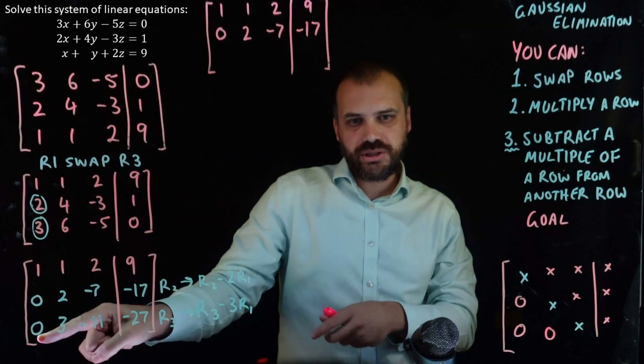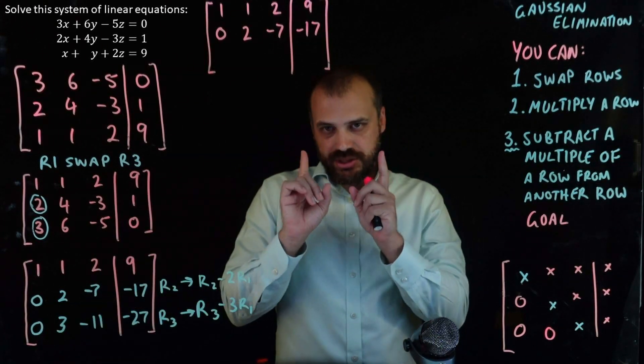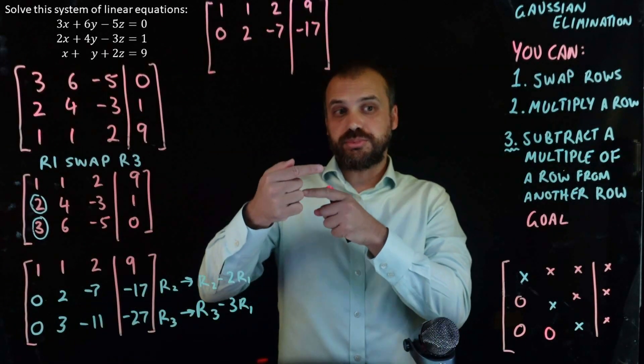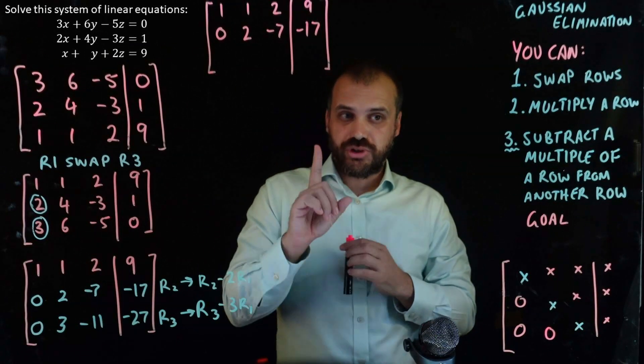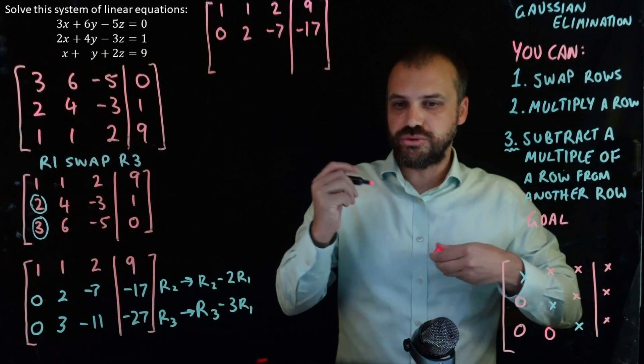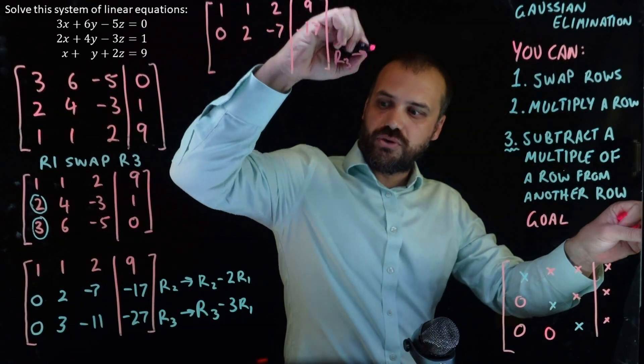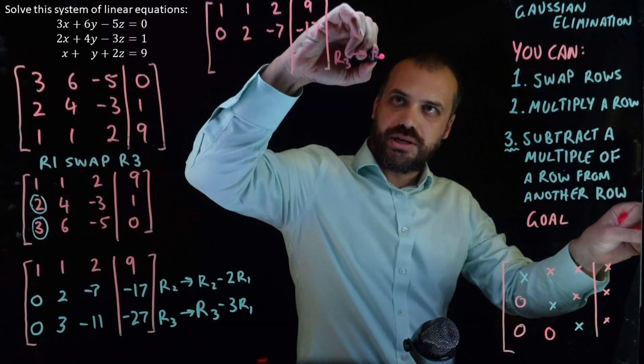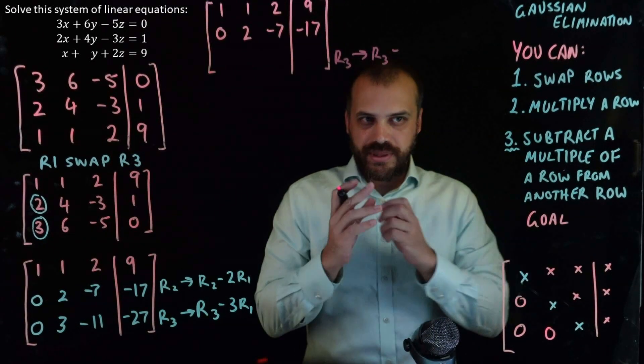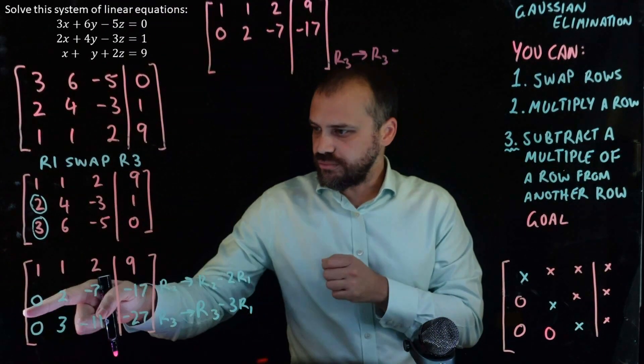So, instead of subtracting a multiple of row one, subtract a multiple of row two. All right, so row three, we're going to transform that by doing row three minus some multiple of row two.